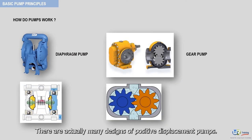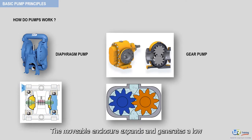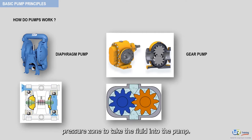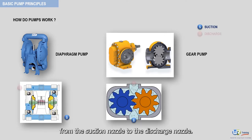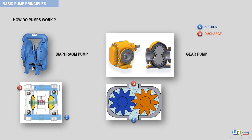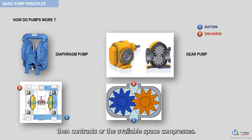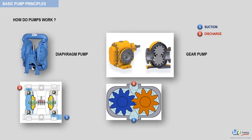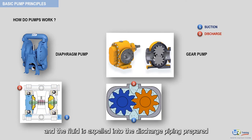There are actually many designs of positive displacement pumps. The movable enclosure expands and generates a low pressure zone to take the fluid into the pump. The captured fluid is physically transported from the suction nozzle to the discharge nozzle. Inside the pump, the expanding movable enclosure then contracts, or the available space compresses, generating a zone of high pressure inside the pump.